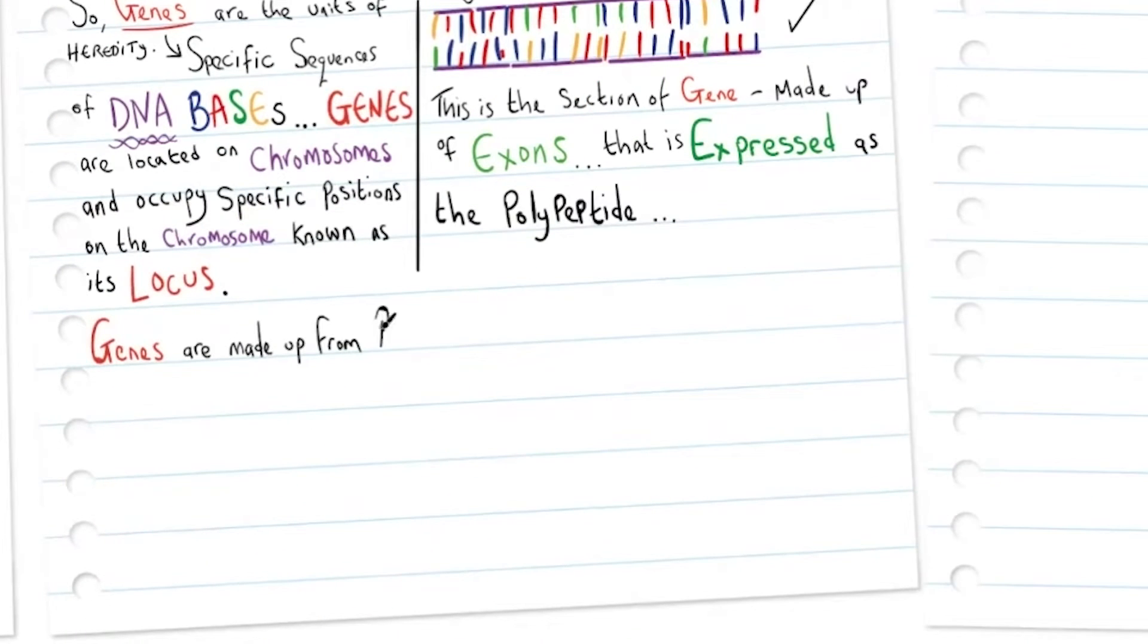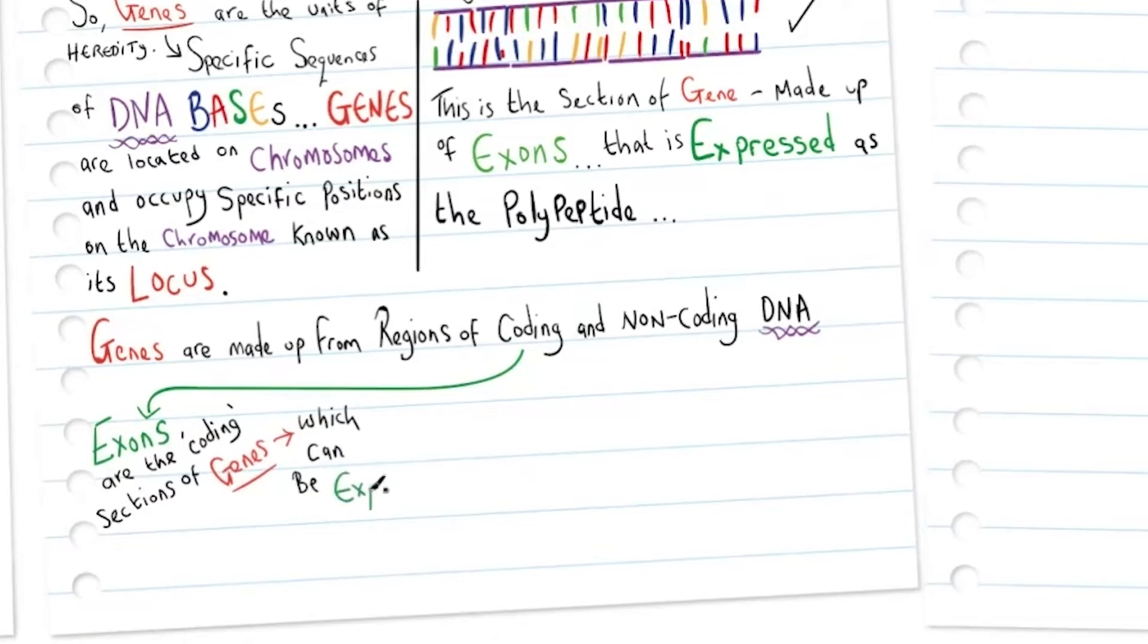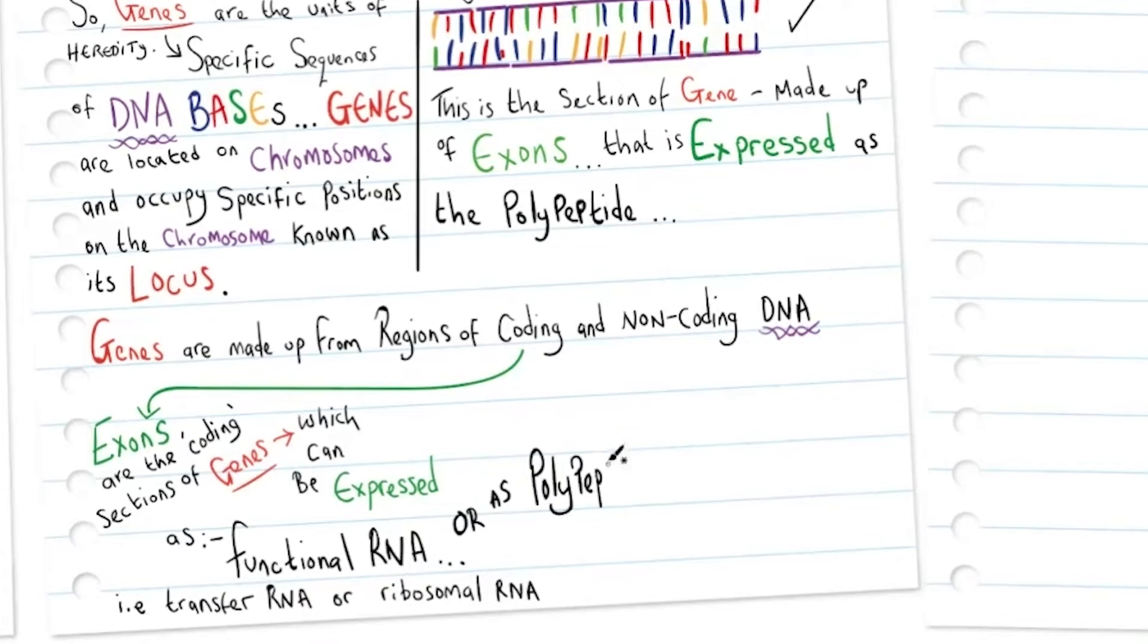Genes are made up of coding and non-coding DNA. The coding regions, these exons, are the sections of genes which can be expressed as functional RNA, i.e., transfer RNA or ribosomal RNA, or they may be expressed as polypeptides, an amino acid sequence that creates the protein.